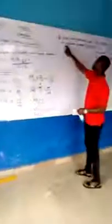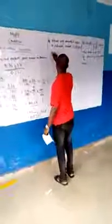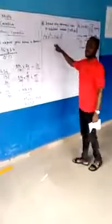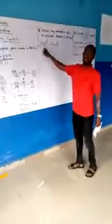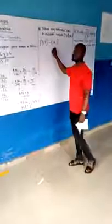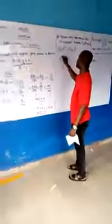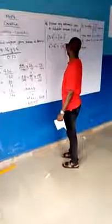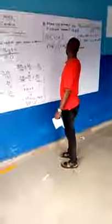For the second question, without using mathematical tables or a calculator, evaluate 73.8 squared minus 26.2 squared. This is a difference of two squares question. We are going to use the formula: a squared minus b squared equals (a + b)(a − b).